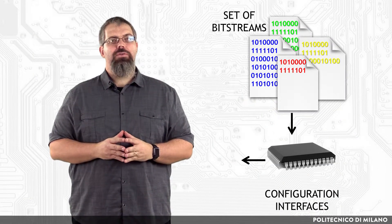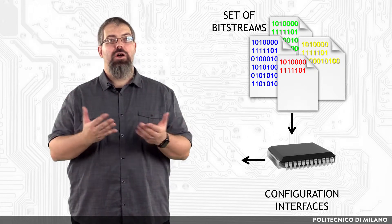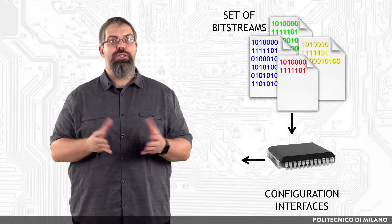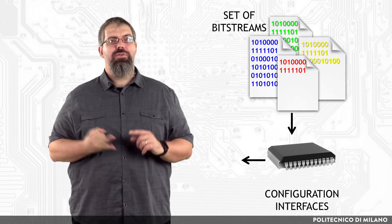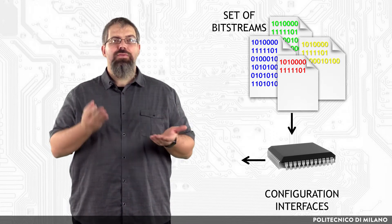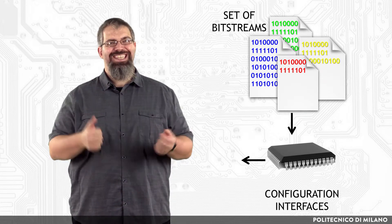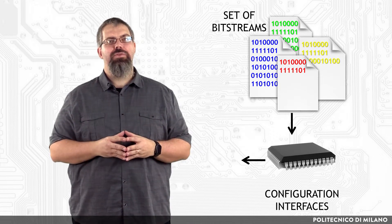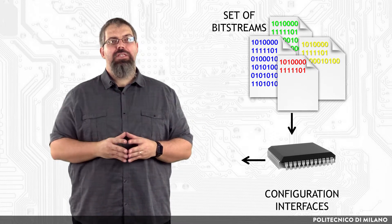FPGAs provide different means for configuration in the form of different interfaces to the configuration logic on the chip. There are several modes and interfaces to configure a specific FPGA family, among them the JTAG download cable, the SelectMap interface for daisy-chaining the configuration process of multiple FPGAs, configuration loading from PROMs or compact flash cards, microcontroller-based configuration, and an internal configuration access port — in the case of Xilinx devices, this is known as ICAP — and there are more depending on the specific family.